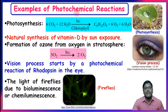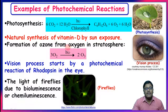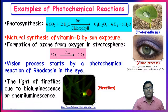Examples of photochemical reactions: Photosynthesis is the best example — plants prepare their own food as carbon dioxide molecules react with water molecules in the presence of light and chlorophyll to give a carbohydrate with liberation of oxygen gas. Natural synthesis of vitamin D by sun's exposure, formation of ozone O3 from oxygen O2 in the presence of light in the stratosphere, the vision process starting by a photochemical reaction of rhodopsin in the eye, and the light of fireflies due to bioluminescence are all examples of photochemical reactions.